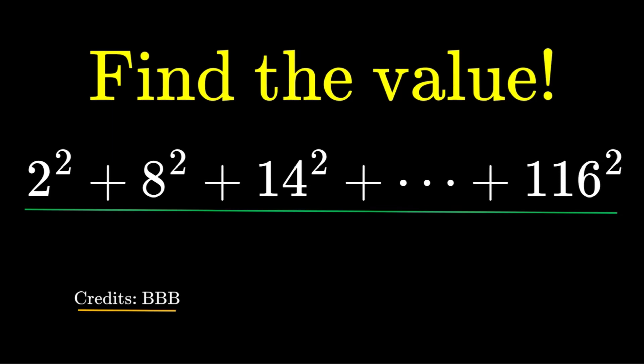Hello, hello, it's Stumplet here. Here's an item on summations. Find the value of the following: 2 squared plus 8 squared plus 14 squared plus so on and so forth until 116 squared. Credits to the Big Baby, the BBB for the item.